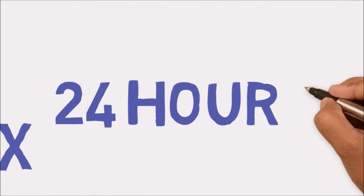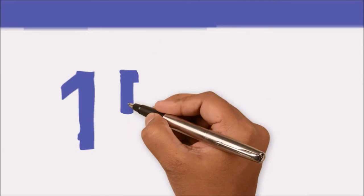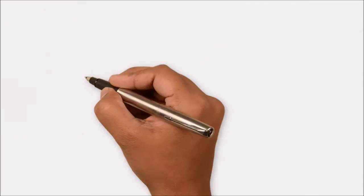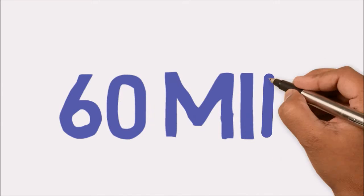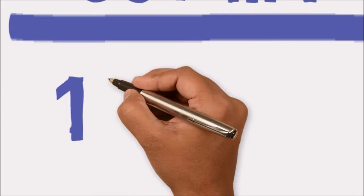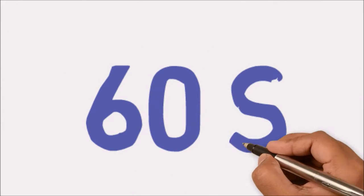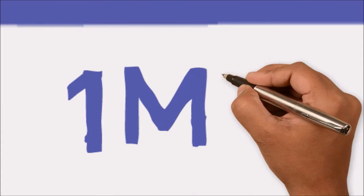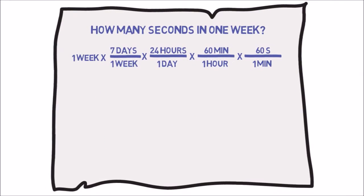The conversion factors we need to solve this problem are seven days in one week, 24 hours in one day, 60 minutes in one hour, and 60 seconds in one minute. After we have arranged the calculation, make sure the units cancel.